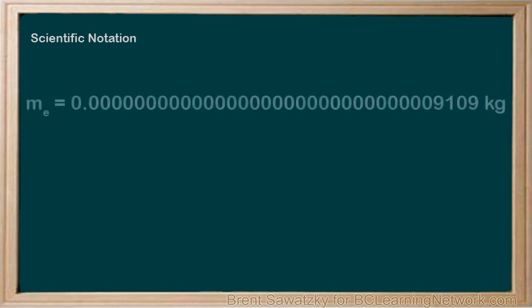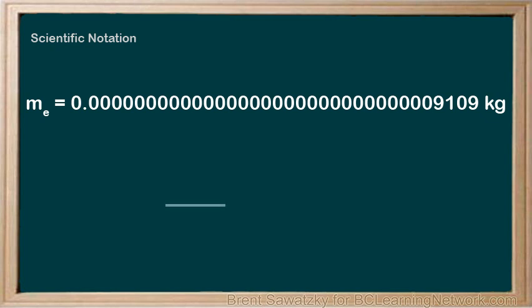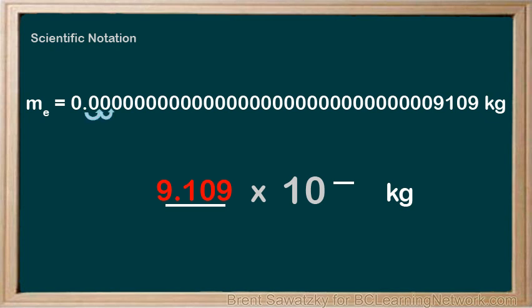Let's do another example, this time looking at a really small number: the mass of an electron. Here it is — all the zeros are out front of our main number. Same format: a number between 1 and 10 out front, then times 10, and then the exponent. Getting to that number between 1 and 10, we'll move the decimal place and we'll see that it's going to be 9.109. This time we're moving the decimal to the right, so we know the exponent will be negative. If we count all our moves, we have 31 moves to the right. So in scientific notation, the mass of an electron is much easier to manage as 9.109 times 10 to the minus 31.